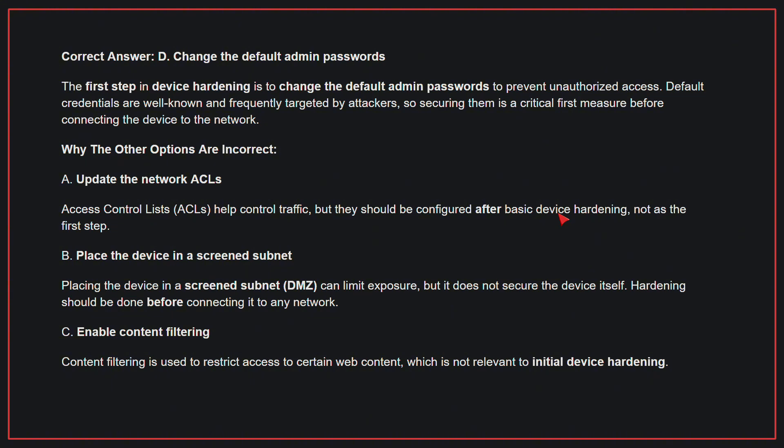Why the other options are incorrect? A, update the network ACLs: ACLs help control traffic, but they should be configured after basic device hardening, not as the first step. B, place the device in a screened subnet: Placing the device in a screened subnet can limit exposure, but it does not secure the device itself — hardening should be done before connecting it to any network. C, enable content filtering: Content filtering is used to restrict access to certain web content, which is not relevant to initial device hardening. Therefore, the correct answer is D, change the default admin passwords.